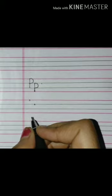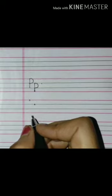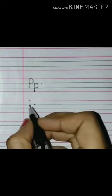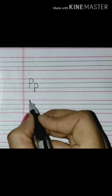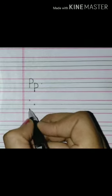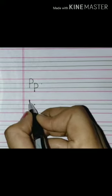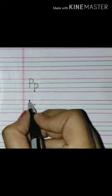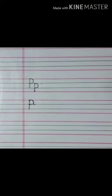Now come and let's see how to write P. P, parrot. For making P, parrot, first you have to make a standing line from the red line to the last blue line in first, second and third line. A straight standing line. Then you have to make a curve starting from the red line and going towards the first blue line. P, P, parrot.